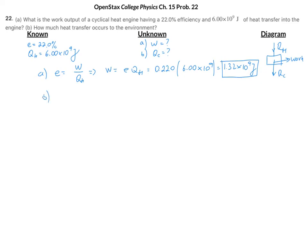Now, in part B, we have to look at the conservation of energy. The amount of heat from the hot reservoir is going to be converted into work, plus the heat that is transferred to the environment. So in this part, we're looking for Q_C, so that's Q_H minus W.